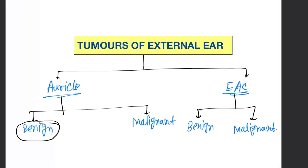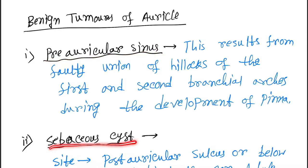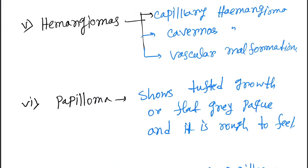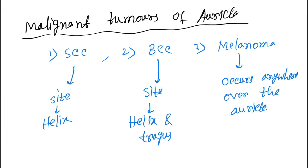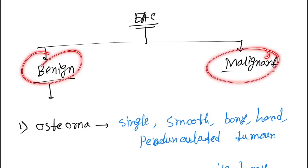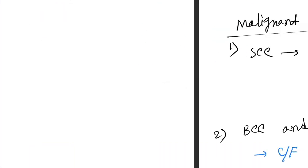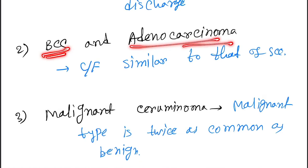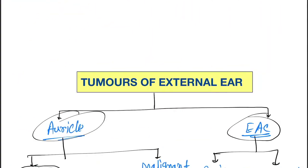To revise: auricle has benign tumors — pre-auricular sinus, sebaceous cyst, dermoid cyst, keloid, hemangiomas, papilloma, cutaneous horn, keratoacanthoma, neurofibroma — and malignant tumors: squamous cell carcinoma, basal cell carcinoma, and melanoma. External auditory canal benign: osteoma, exostosis, ceruminoma, sebaceous adenoma, papilloma. Malignant: squamous cell carcinoma, basal cell carcinoma, adenocarcinoma, malignant ceruminoma, and malignant melanoma.